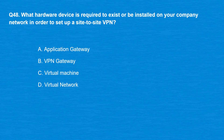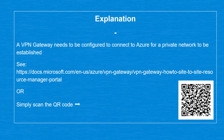Question 48: What hardware device is required to exist or be installed on your company network in order to set up a site-to-site VPN? Option A: Application Gateway. Option B: VPN Gateway. Option C: Virtual Machine. Option D: Virtual Network. The correct answer is Option B, VPN Gateway. A VPN Gateway needs to be configured to connect to Azure for a private network to be established.